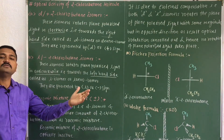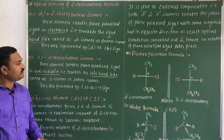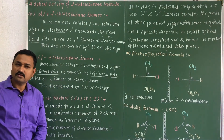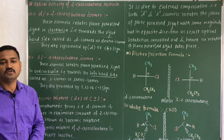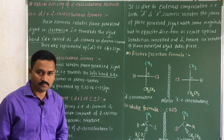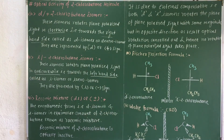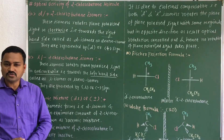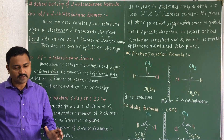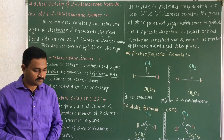These are the six different points discussed about the optical activity of 2-chlorobutane, which is very important. If you represent them in this manner, you will get three to four marks. Thank you so much for watching this video, see you in the next one.